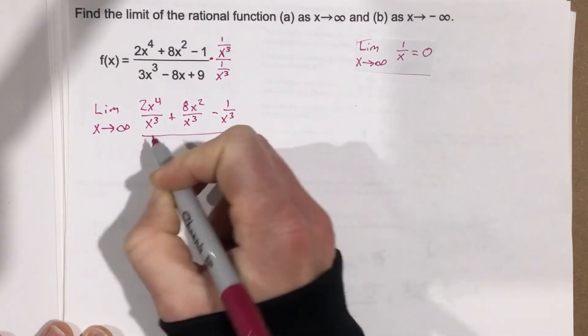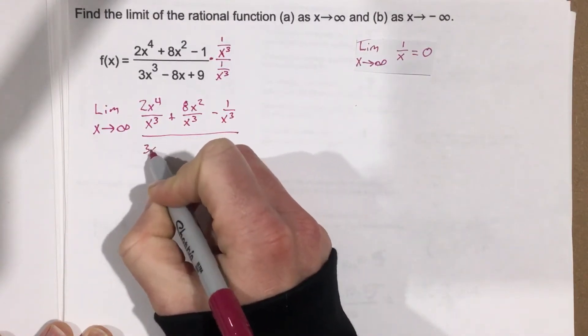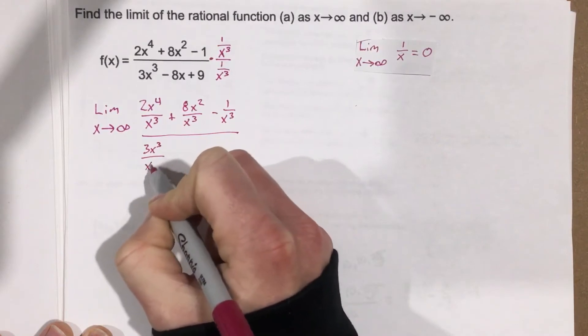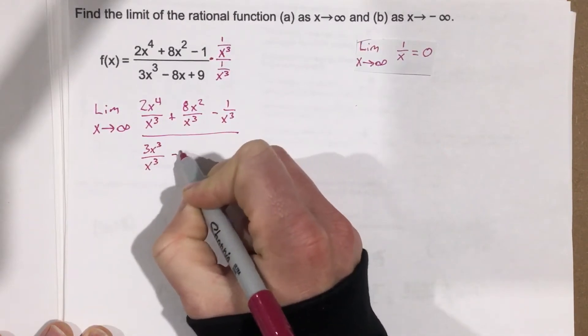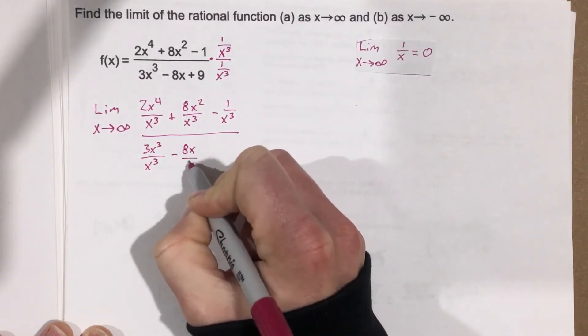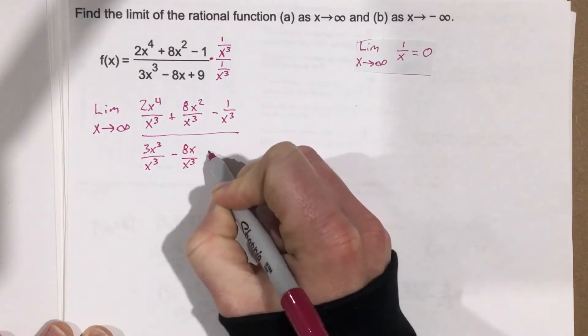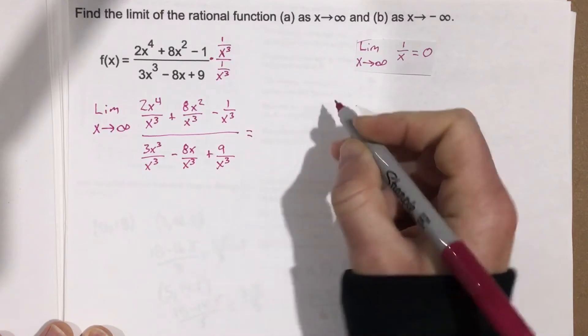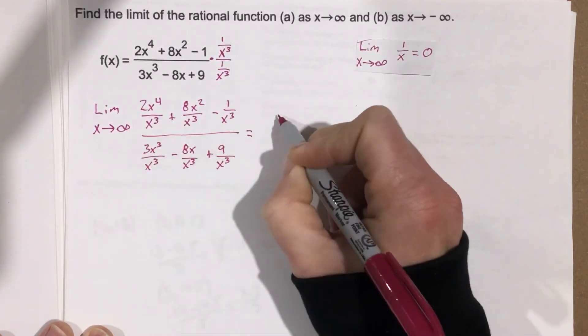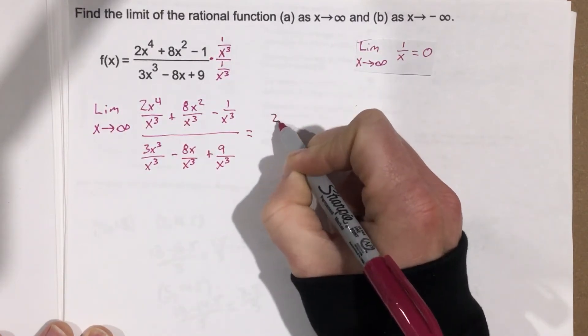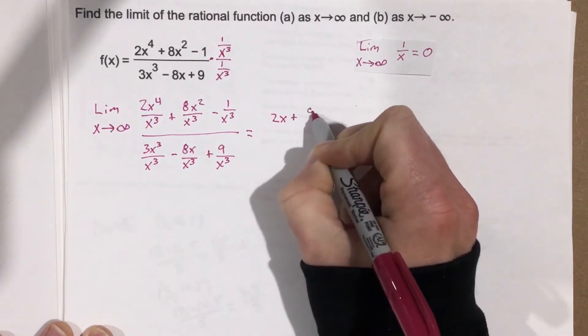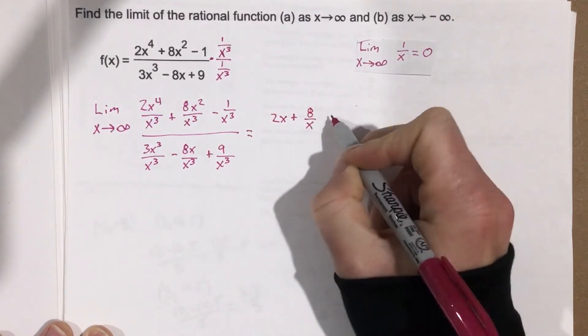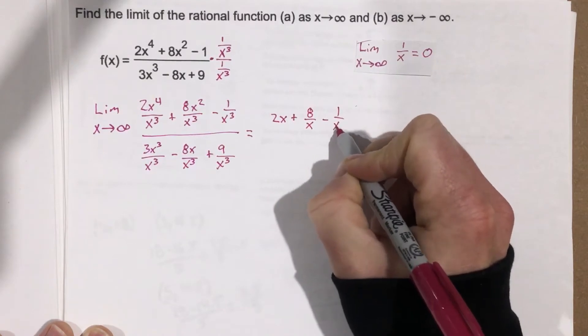all over 3x cubed over x cubed, minus 8x over x cubed, plus 9 over x cubed, which will simplify to 2x plus 8 over x minus 1 over x cubed,